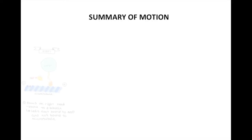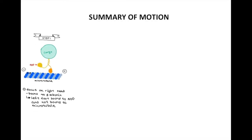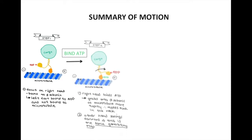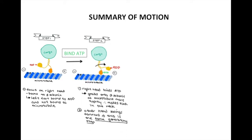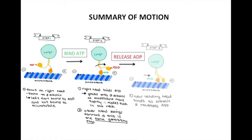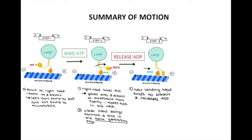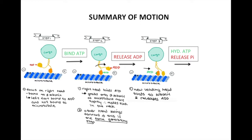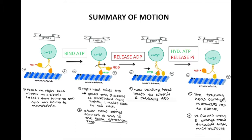Let's do a quick summary. One of the heads of the motor domain, where the catalytic core binds to the beta subunit of a microtubule, and that same head binds ATP. The other head swings forward, binds to the microtubule, and releases ADP. On the original head, ATP is hydrolyzed, an inorganic phosphate is released, and the head is detached from the microtubule. And the process repeats.